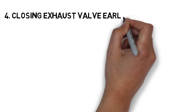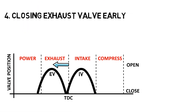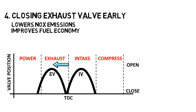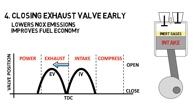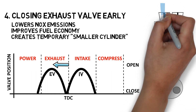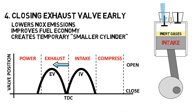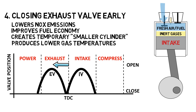Closing the exhaust valve early is another method to lower NOx emissions and improve fuel economy by preventing all the inert gases from exiting the chamber. This creates a temporary smaller cylinder that consumes less air fuel in the following cycles and produces lower gas temperatures.